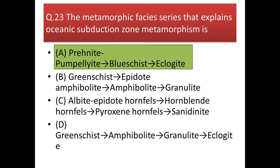Next question: the metamorphic facies series that characterizes oceanic subduction zone metamorphism? Because it is a subduction zone metamorphism, it is performed under high pressure conditions. The correct answer is prehnite-pumpellyite, then blueschist, and then eclogite. If it were contact metamorphism, the answer would be option C: albite-epidote hornfels, hornblende hornfels, pyroxene hornfels, and finally sanidinite hornfels — a high temperature metamorphic series. Here, since subduction zone metamorphism is asked, our answer is option A.